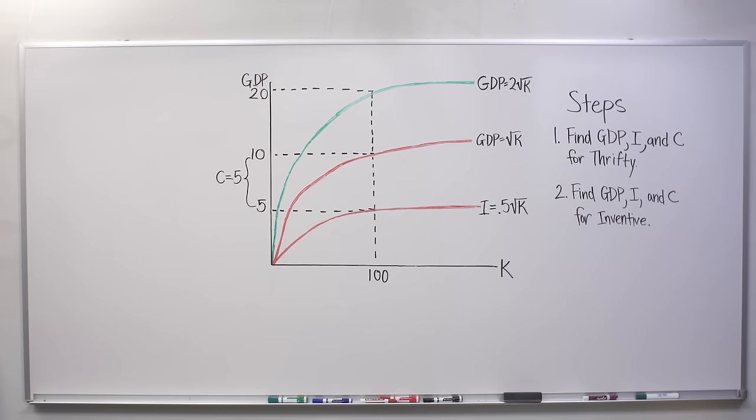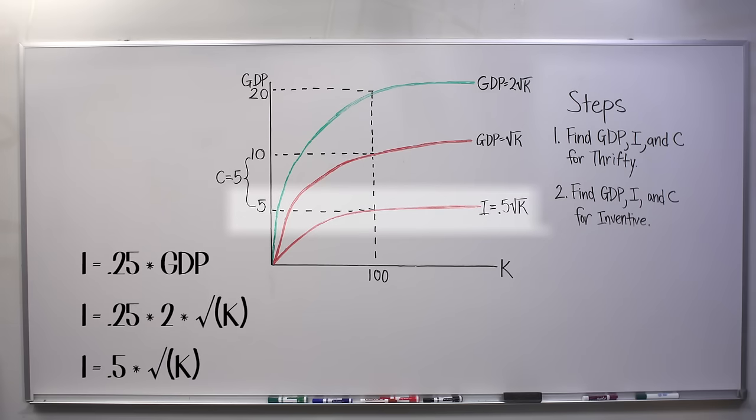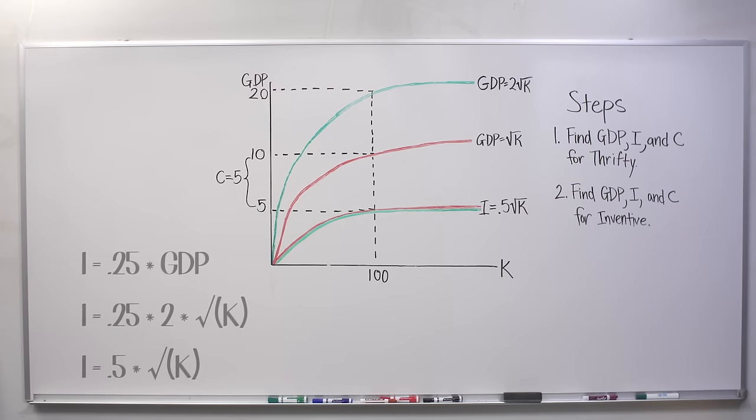If it's investing 25% of GDP per year, 25% of 20 is 5. More generally, its investment curve is 0.5 times the square root of K. And again, consumption is just the leftover GDP after investment. So 20 minus 5, or 15.